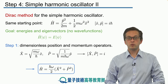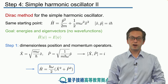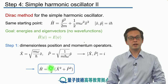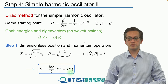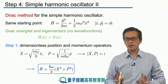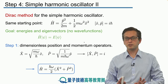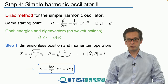We can also substitute back into our Hamiltonian and find the new form: one half h bar omega times X squared plus P squared. We haven't done anything here — we have just rescaled our operators and obtained the corresponding rescaled Hamiltonian.